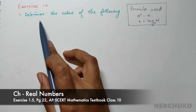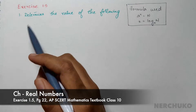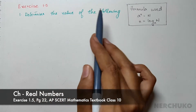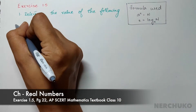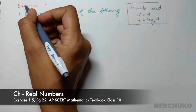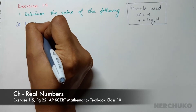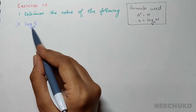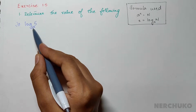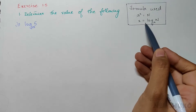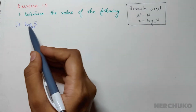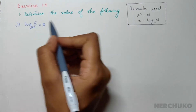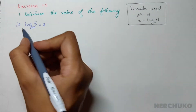Now we are going to move to logarithms. For the first problem in Exercise 1.5, we have to determine the value of log 5 to base 25. In order to determine this logarithm value, I will be using the exponential form to logarithm conversion. Let me assume that log 5 to base 25 is equal to x.